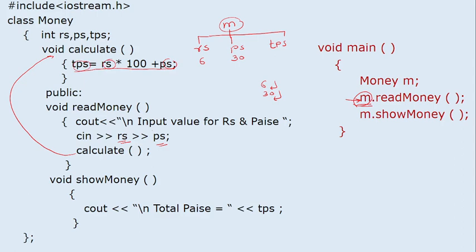Read money is calling calculate, and read money itself is called by M. So RS, PS, and TPS are all considered from M. At the end of each function, control comes back to the calling program. Then M.showMoney goes to execute show money and displays total paise equal to 630. This is a simple example.